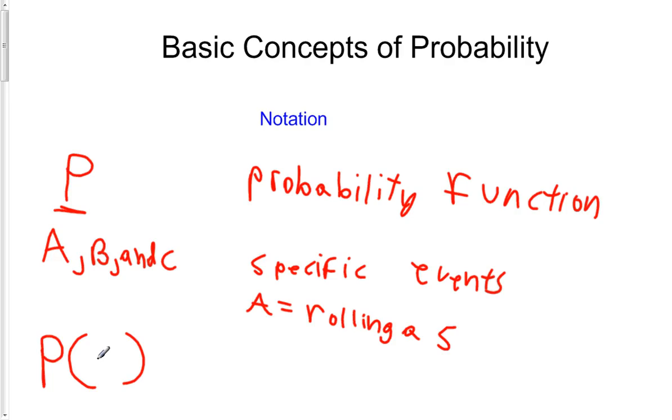And the independent variable here, we're going to actually let this be a function of sets, these events. This is going to be a function of events. So we're going to feed this function events, and it's going to spit back out a probability.